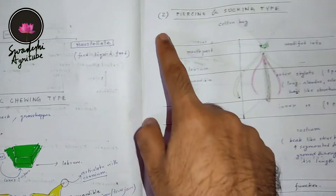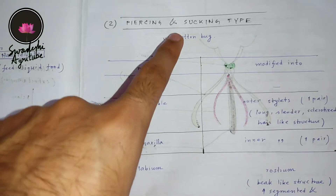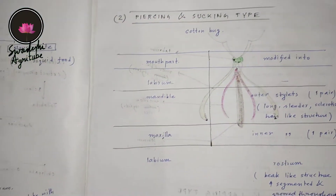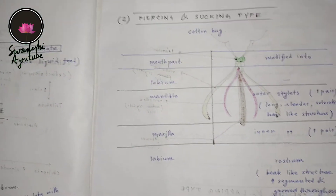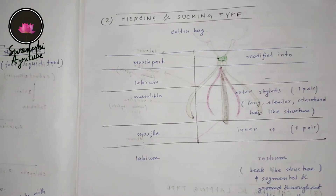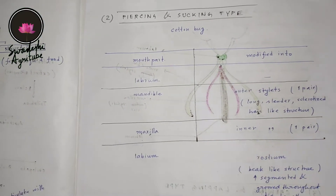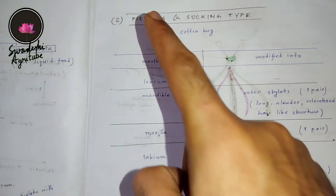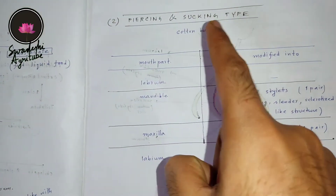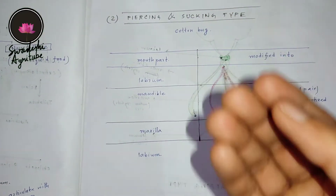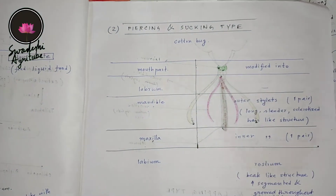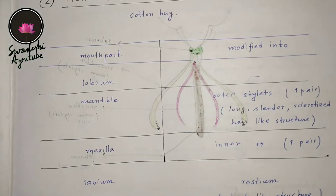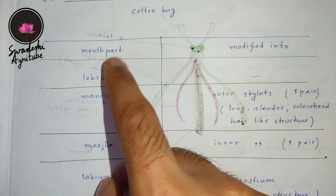Today I will discuss the piercing and sucking type of mouthpart. Cotton bugs and aphids have this type of mouthpart. Here is one bonus point: if you want to control insect pests which have piercing and sucking type mouthparts, you have to apply systemic insecticide.